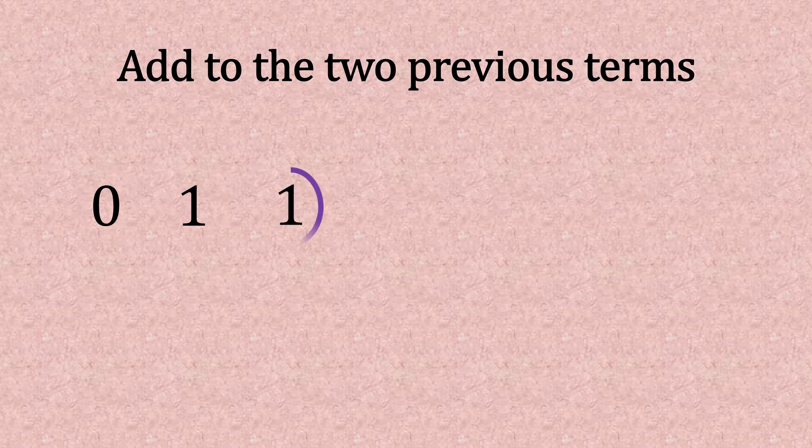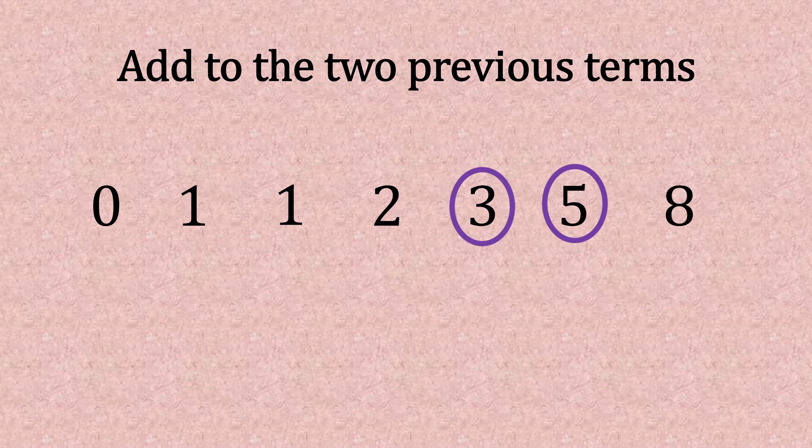Now we add 1 plus 1 gives us 2. And next, 2 plus 1 gives us 3. And then 3 plus 2 gives us 5. And then 5 plus 3 gives us 8. And that's the Fibonacci sequence.